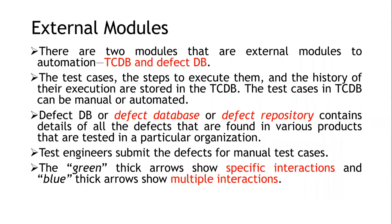In external modules, there are two modules: TCDB (test case database) and defect DB. In the test case database, we store all the test cases, the procedures to do the testing, and the history of their execution. It can support both manual and automated test cases. The defect DB — also called defect repository — contains details of all defects found in the product tested across various organizations. Test engineers submit defects manually, and automated test cases can be submitted automatically using the automated framework.